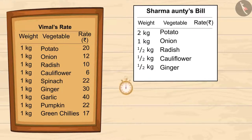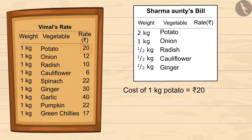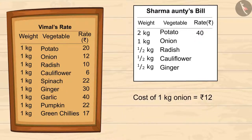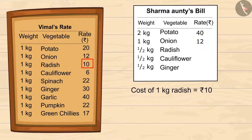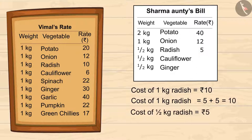You can pause the video and calculate it with the help of Vimal's list. According to Vimal's list, 1 kg of potato costs 20 rupees. So 2 kgs will cost 2 multiplied by 20, which means 40. 1 kg onion is 12 rupees. 1 kg radish is 10, so half of it is 5 rupees.